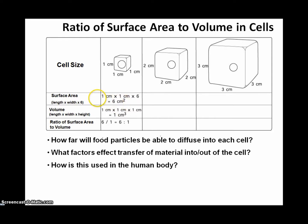That in this case would represent our amount of membrane surrounding the cell. The volume would be the amount of cytoplasm within that, which of course is calculated length times width times height. So here we have six centimeters squared for our surface area and our volume is one centimeter cubed. When we divide our surface area by our volume, we get an answer that is a ratio of six to one.